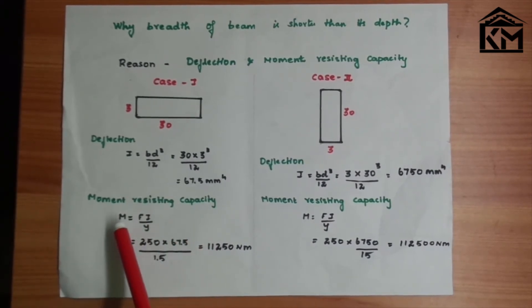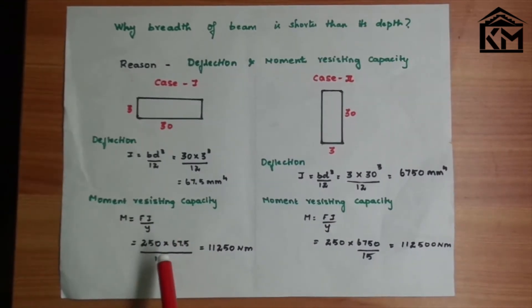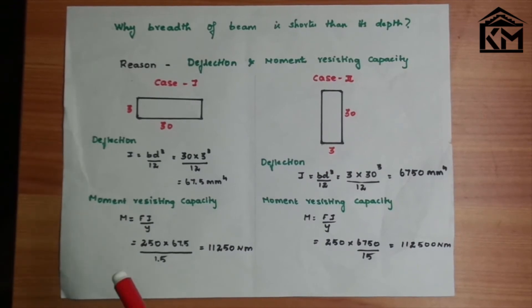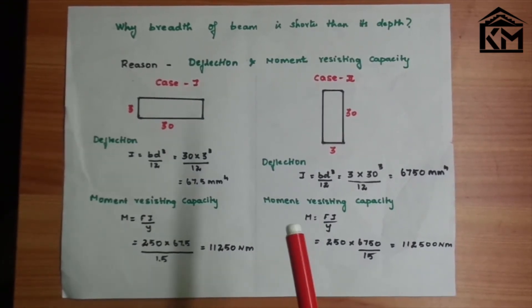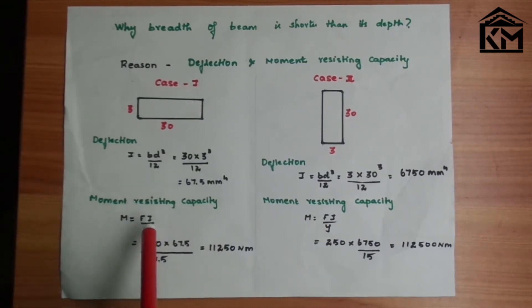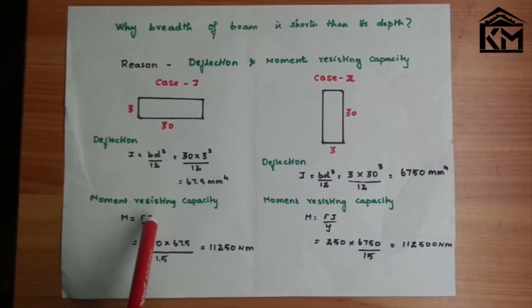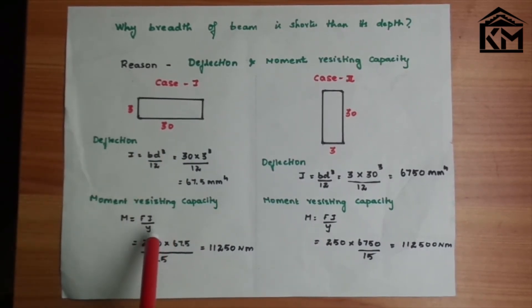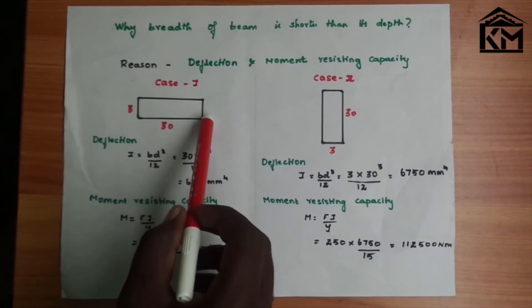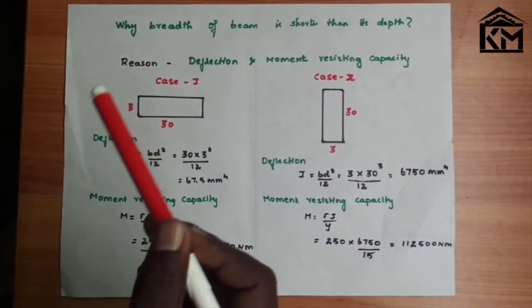The formula is M is equal to F times I divided by Y. F is the grade of steel. You can see different grades like steel FE 250, FE 415, FE 500. I is the deflection we calculated. Y is d by 2, where d is the depth of the member, depth divided by 2.